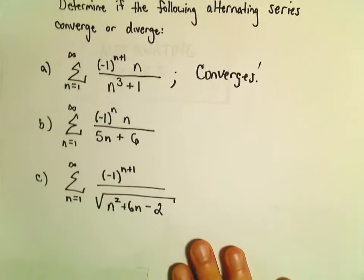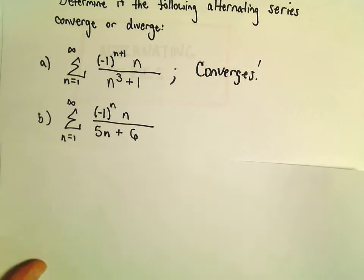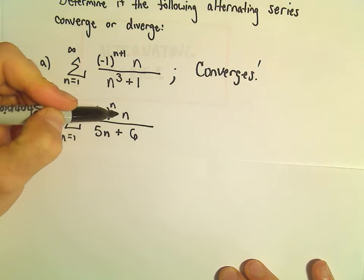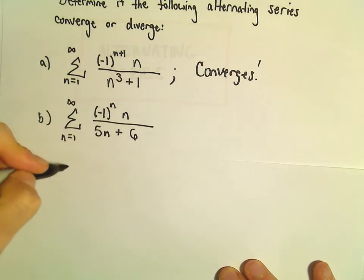Alright, so another example here using the alternating series test. We've got the series from n equals 1 to infinity, negative 1 to the n, times n over 5n plus 6.